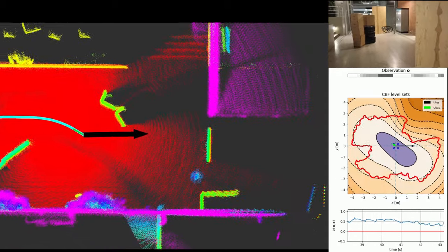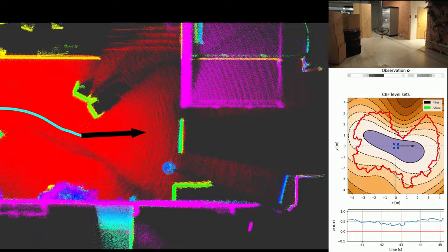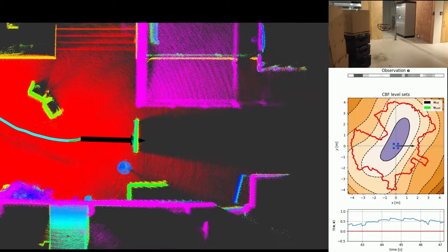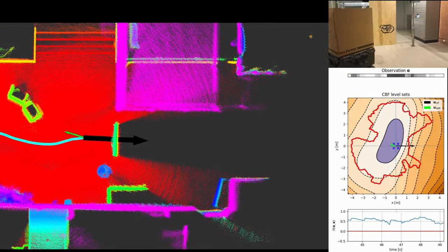The resulting policy deflects the robot away from obstacles and prevents collision. A slice of the safe set at the current velocity is shown in purple on the right.